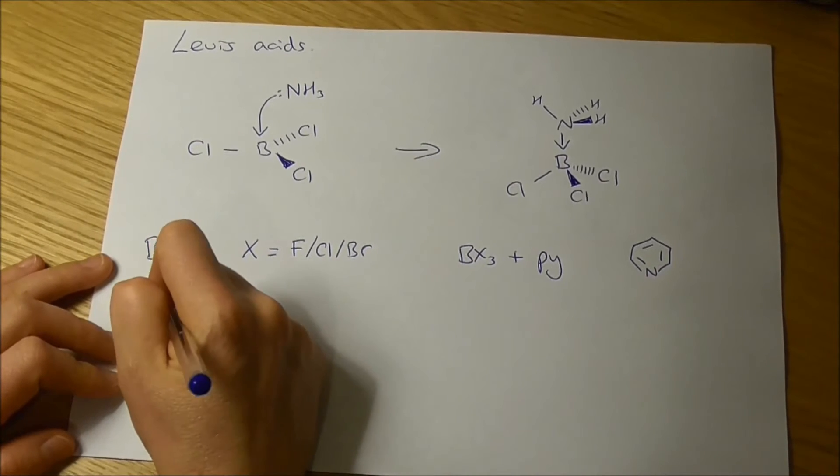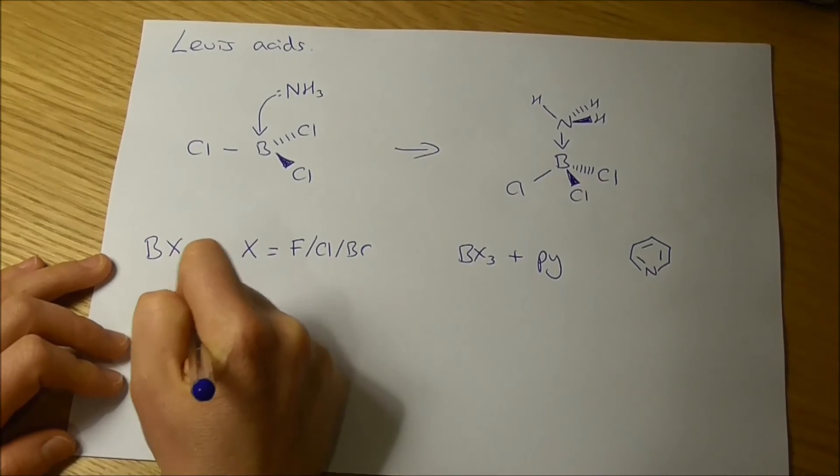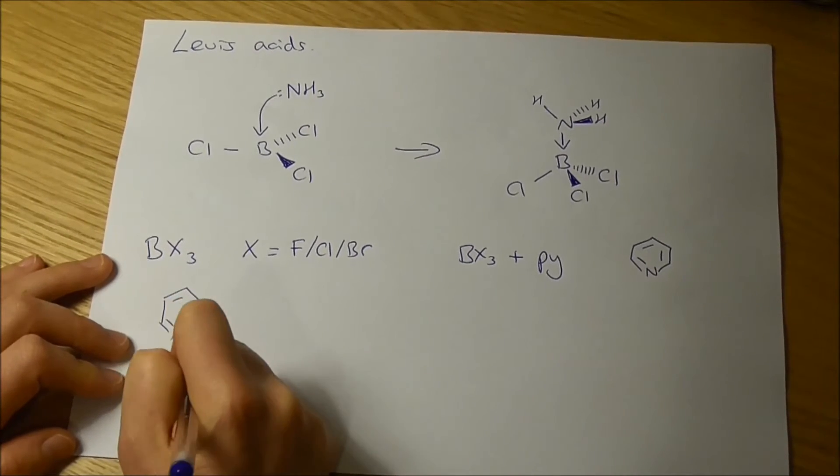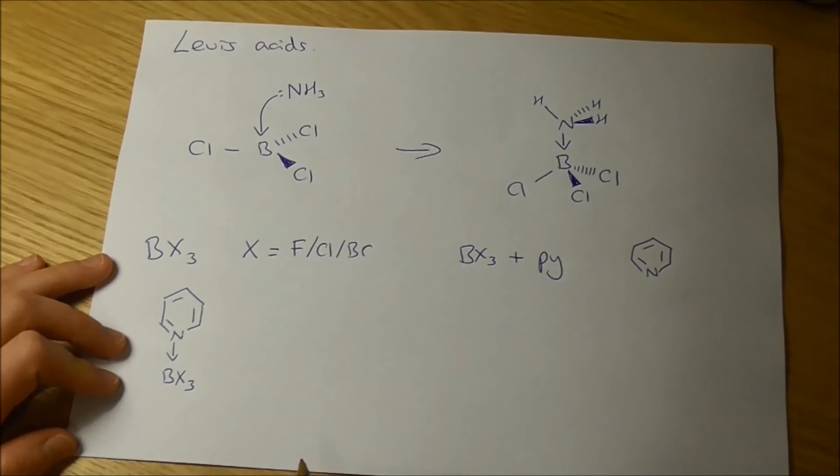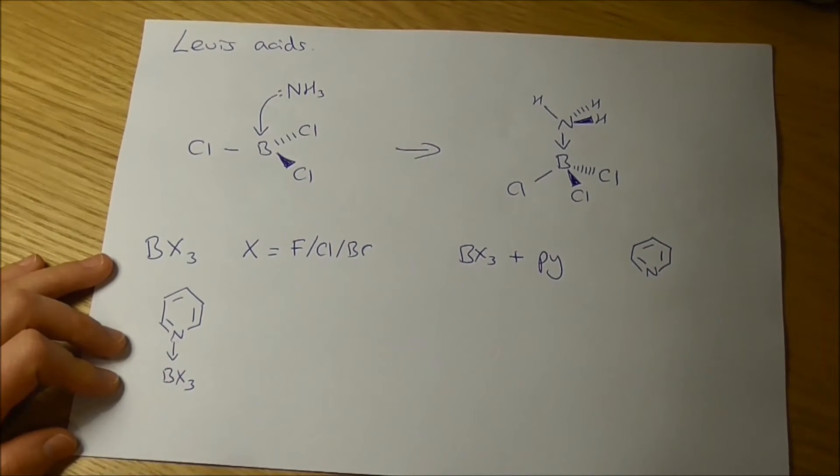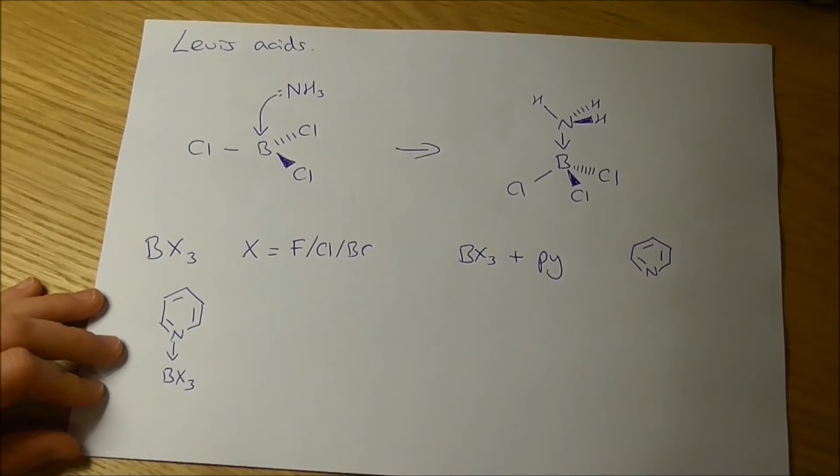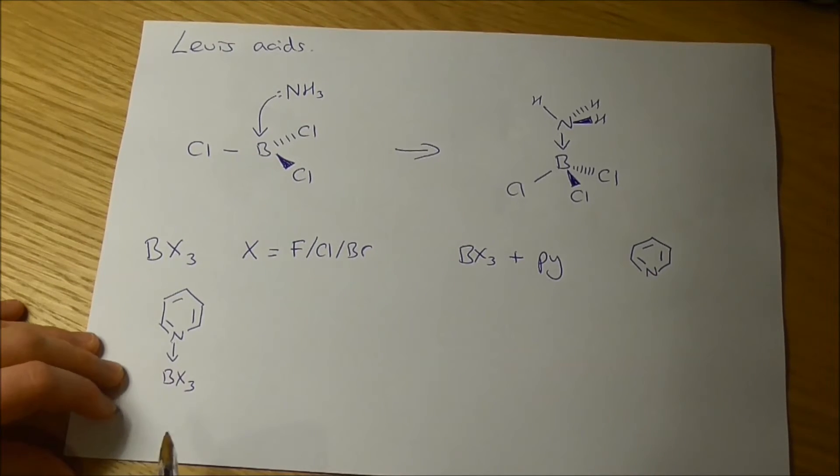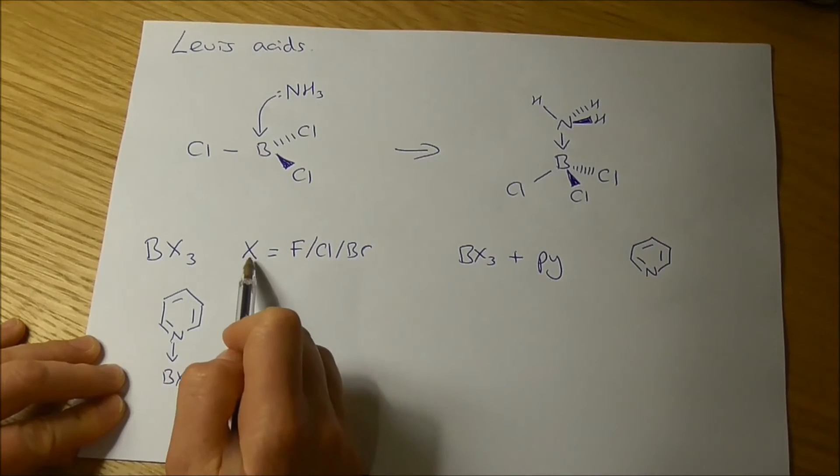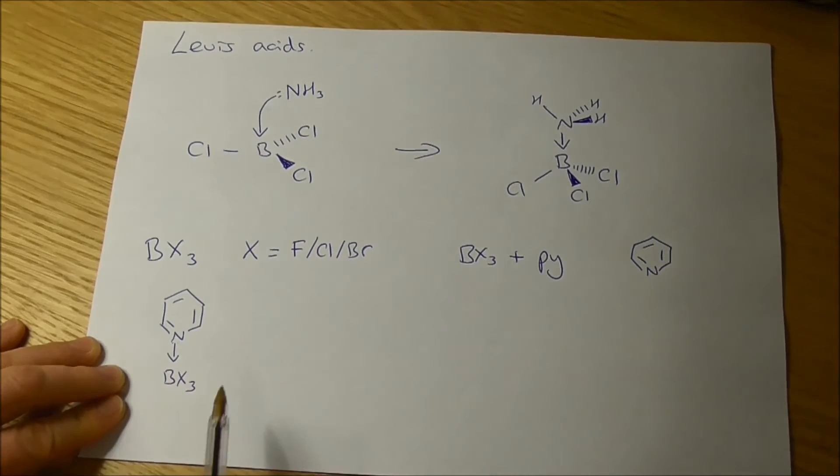So we've got our pyridine forming a complex with our BX3, just like this reaction up here, a dative covalent bond between the lone pair on the nitrogen and the boron down there. Now, what you might expect to happen is a difference in energetics between the three reactions where X is fluorine, chlorine, or bromine.